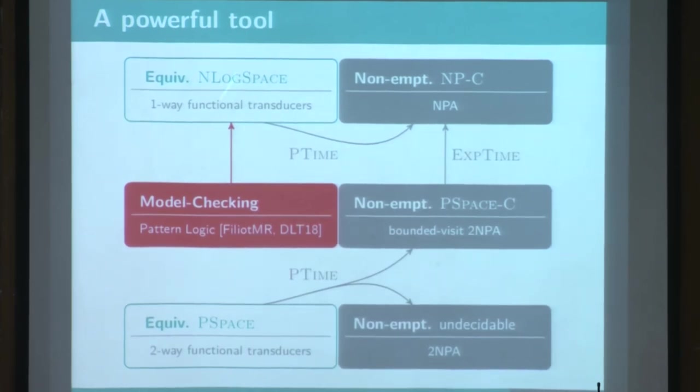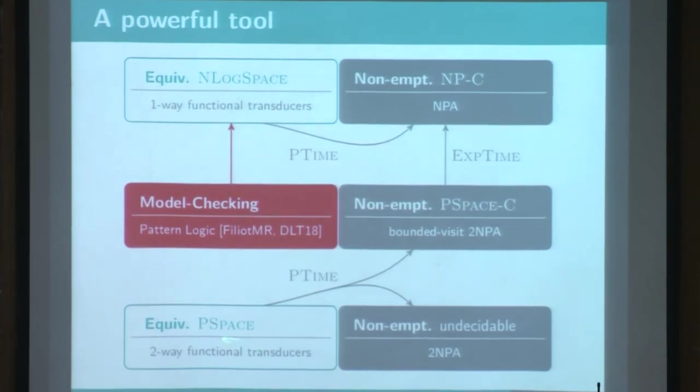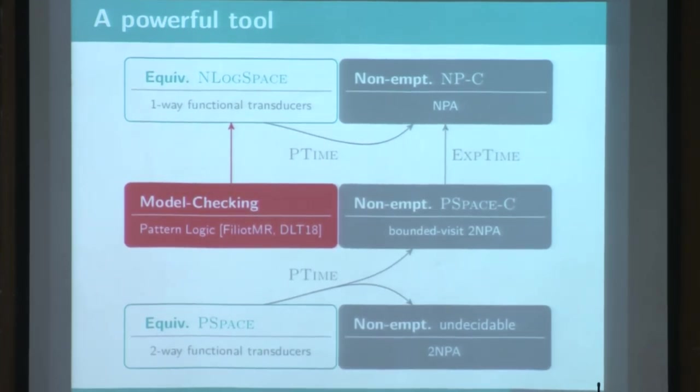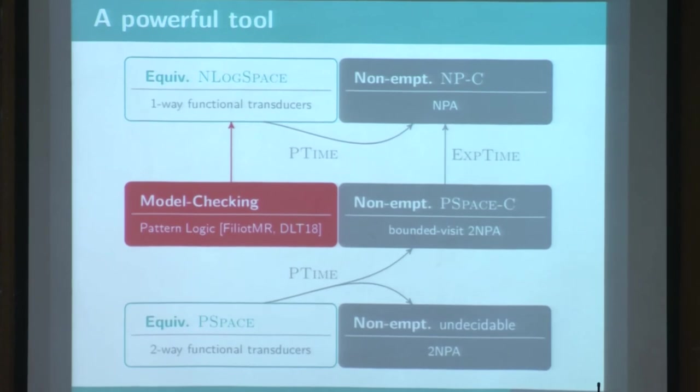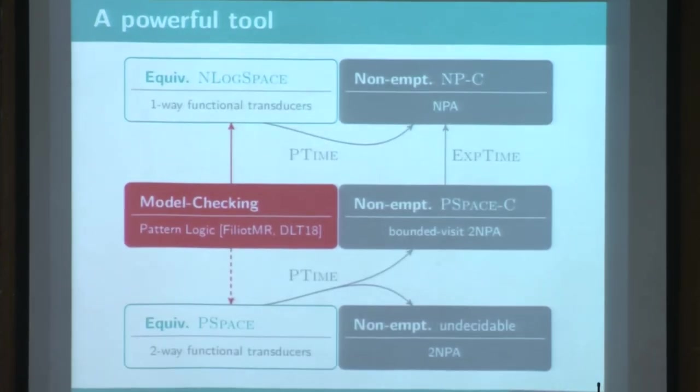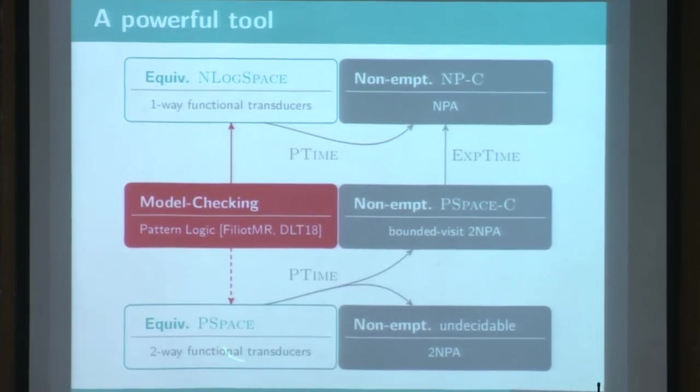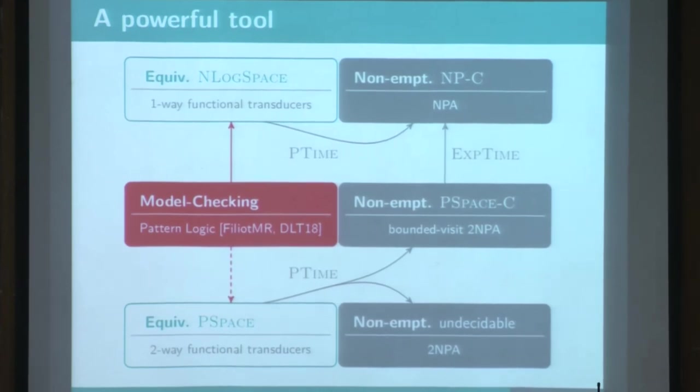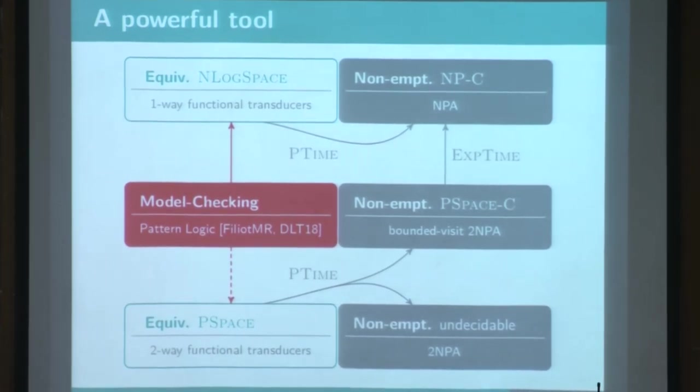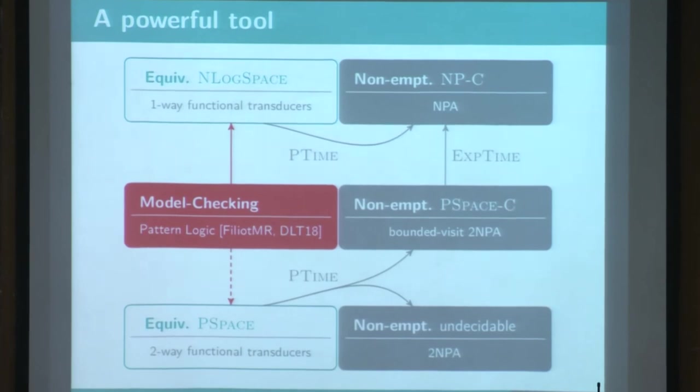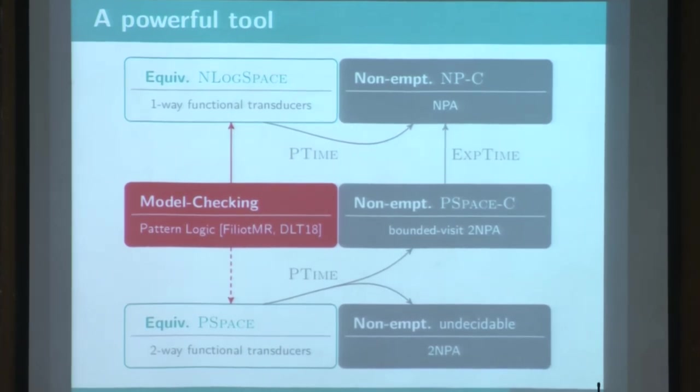In fact, I didn't precise it, but I bet that those two bounds are tight, even for total function. And all those work on Parikh automata and two-way cannot be handled by this pattern logic, and this is actually a work that we would like to do, and we are looking for, it's to extend this pattern logic for two-way automata.